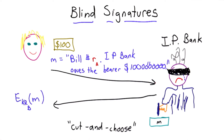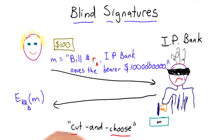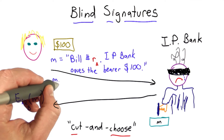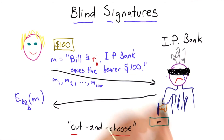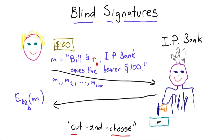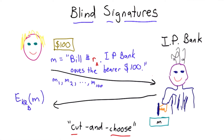The solution to this is a technique known as cut and choose. This is somewhat similar to what we saw in auditing for mixed nets, and it has lots of applications to other cryptographic problems as well. Instead of just generating one message, Alice would generate a large number of messages — let's say 100 of them — and send them all to the bank. The banker will then randomly pick one of these messages.